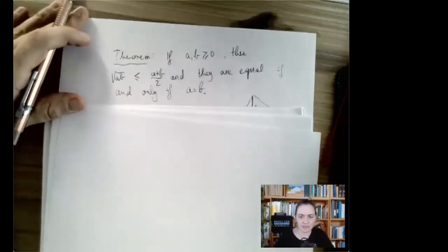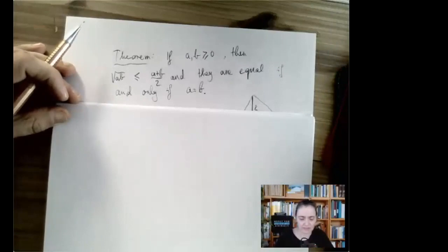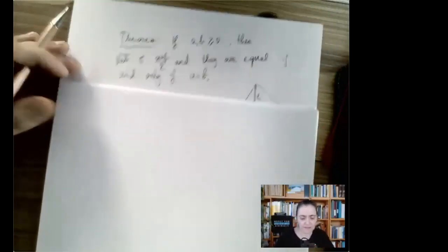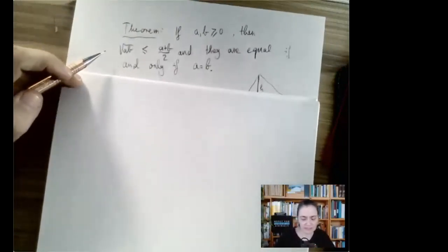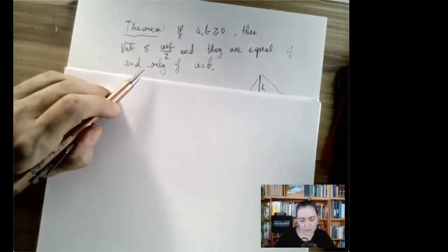Recall the Arithmetic Geometric Mean Theorem that says if a and b are non-negative numbers, then the square root of ab, which is the geometric mean of a and b, is always less than or equal to the arithmetic mean of a and b, a plus b over 2.